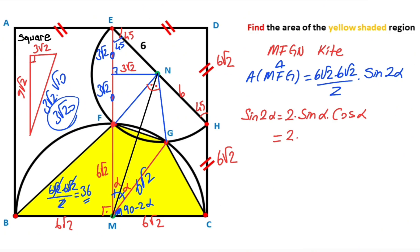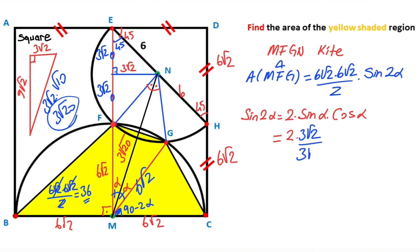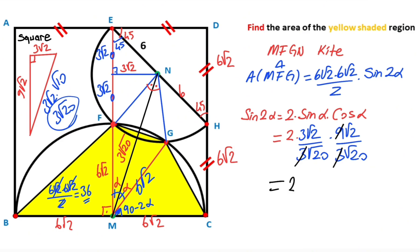The hypotenuse must be equal to 3√20. Therefore this length is 3√20. So sin(α) = 3√2 / 3√20, and therefore sin(2α) = 2 × sin(α) × cos(α) = 2 × 3 × 2 / 20 = 3/5. So sin(2α) equals 3/5.